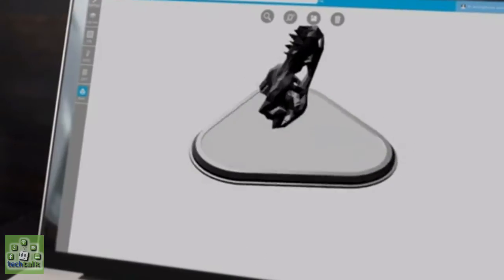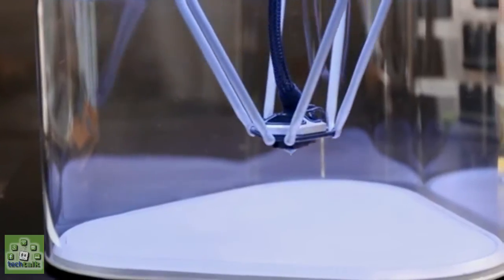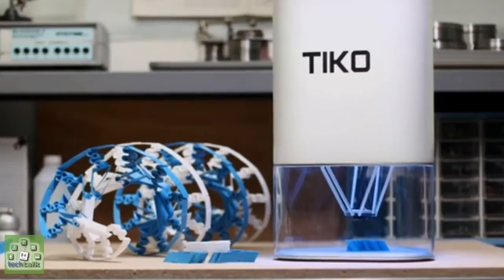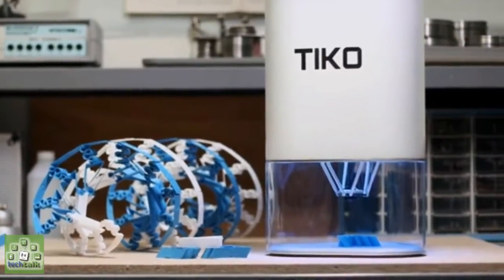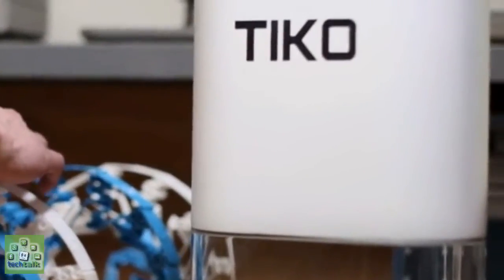Tyco is unibody. That means the whole frame is one piece, introducing an amazing array of benefits. Easy to manufacture, virtually impossible to misalign. That's how you get a quality 3D printer for $179.